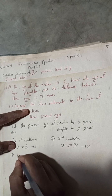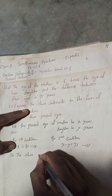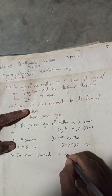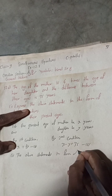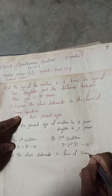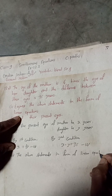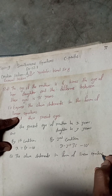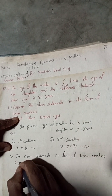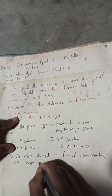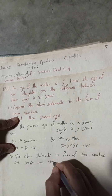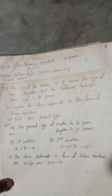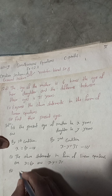Therefore, the above statements in the form of linear equations are: x = 6y and x − y = 35. This is the solution for part number one. Now for part number two, we put the x value from Equation 1 into Equation 2.